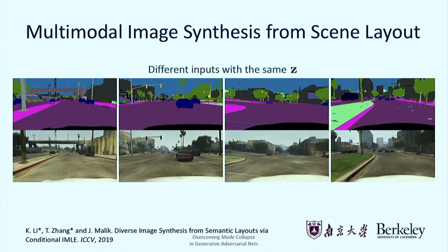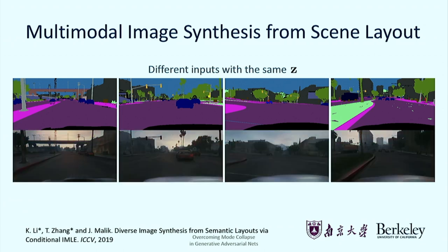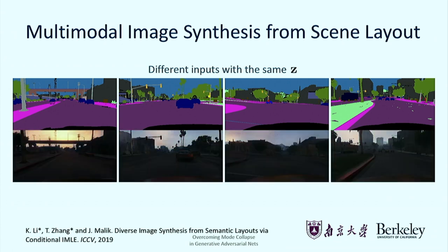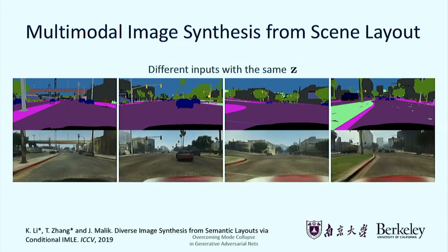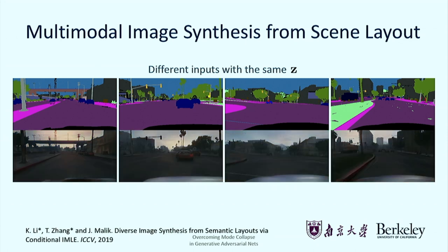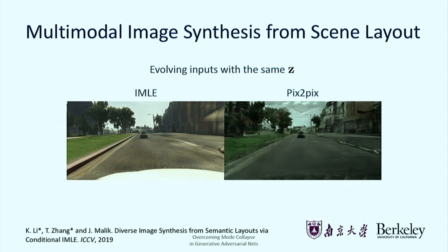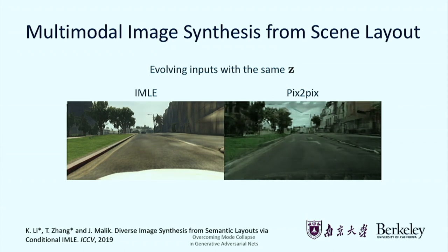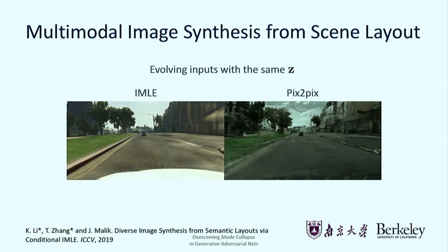We also test consistency of z's across different inputs: using the same z value across different scene layouts, our method produces visually consistent images. We exploit this property to generate smooth video — feeding a sequence of different scene layouts while fixing one realization of z across all frames. Our method produces a consistent-looking video with no flickering, whereas a GAN-based model flickers because at every different frame it may pick a different mode in the distribution.